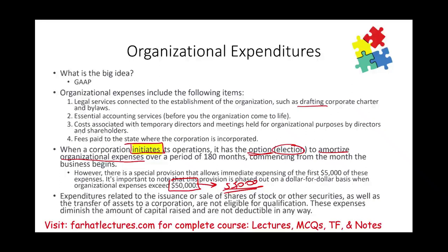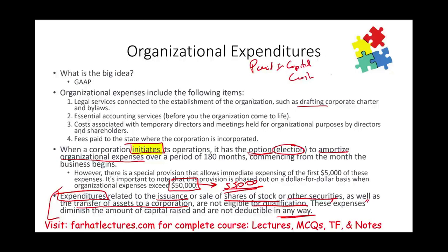We also need to know that expenditure relating to the issuance and sale of shares or other securities — costs related to the stock itself — as well as costs for the transfer of assets to a corporation, are not eligible for this treatment. These expenses are not deductible in any way. Instead, they reduce paid-in capital: you debit paid-in capital and credit cash. So rather than being expensed, they reduce your equity account.